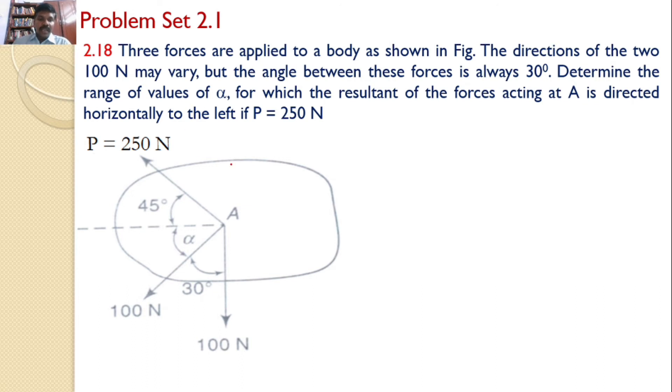And this gamma is given by sin gamma equals P by R into sin alpha. So, in this problem, first let us try to find the resultant of these two 100 newtons force. The angle between these two 100 newtons force is given as 30 degrees.